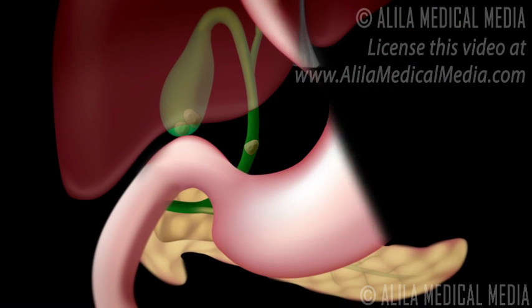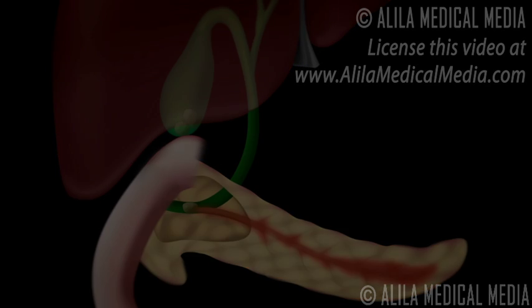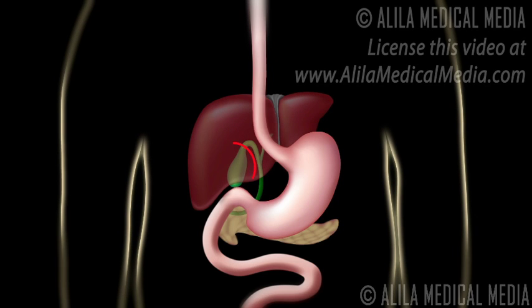Gallstones may also obstruct the pancreatic duct, forcing pancreatic enzymes to back up in the pancreas. This damages the pancreatic tissues and triggers an inflammatory response. This condition is known as acute pancreatitis, or sudden inflammation of the pancreas.